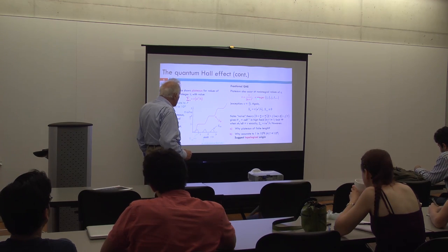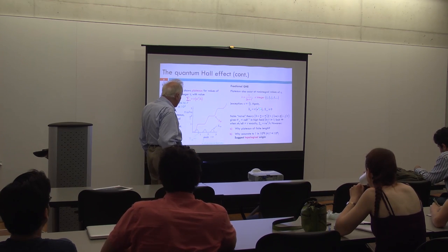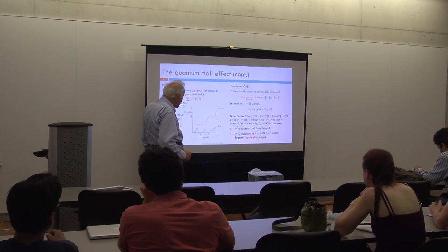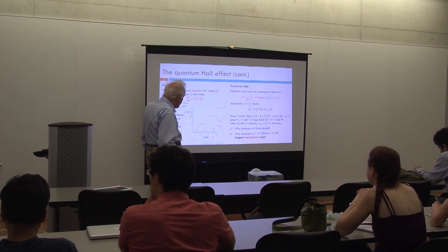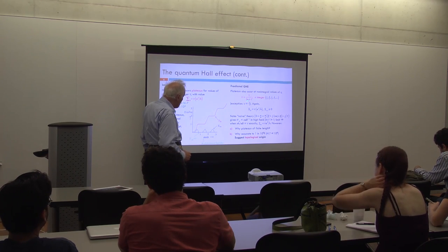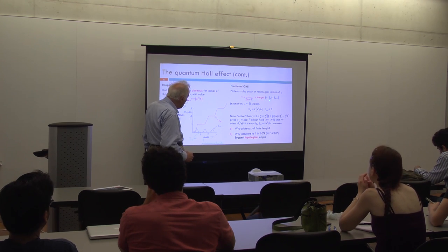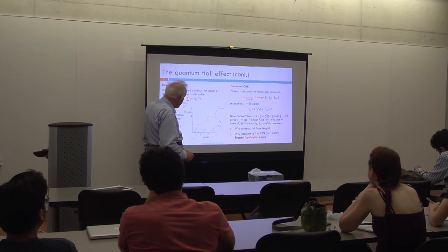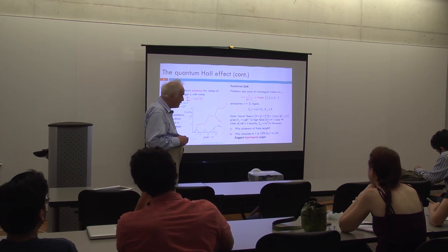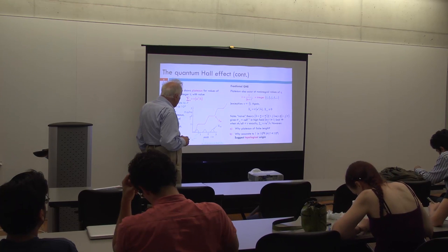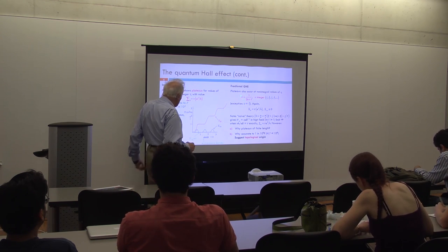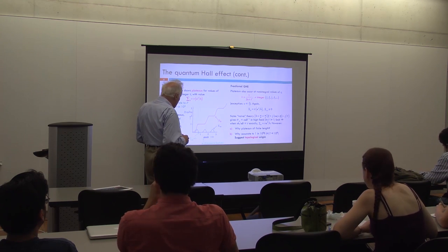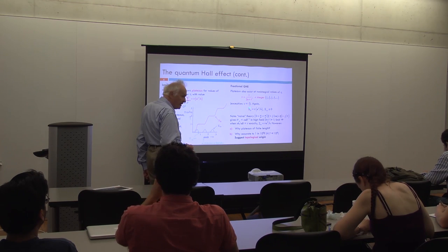Plateaus also occur at non-integral values of ν — at ν = 1/(2n+1) where n is an integer, or more generally at rational fractions p/q where q is almost always an odd integer: for example 1/3, 1/5, 2/5, 4/7, et cetera. By now there are something like 50 different values of ν where this occurs. One very notable exception, to be discussed in a later lecture, is ν = 5/2. That does appear to correspond to a genuine quantum Hall plateau, but the denominator is even — that's always been a big mystery.